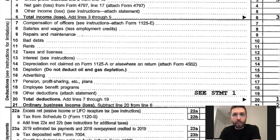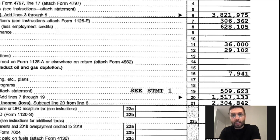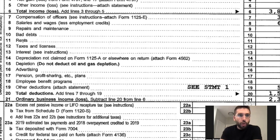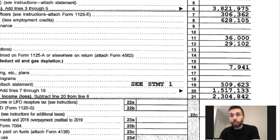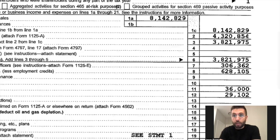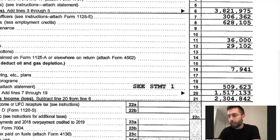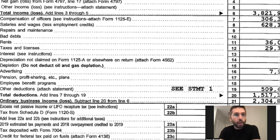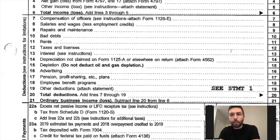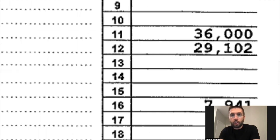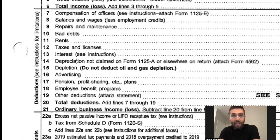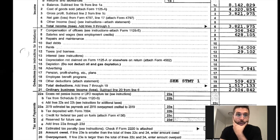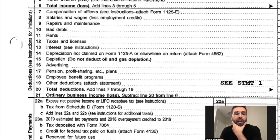Repairs and maintenance — this is a view on the building — they didn't have any. Bad debt, line ten, they didn't have anything. Line eleven is rents: their rents were $36,000, which is really cheap for over 8 million in revenue. Line twelve, taxes and licenses — just under $30,000. Line thirteen is interest, basically interest expense from loans — they're not leveraged, paying no interest, which is a good sign when analyzing a business.